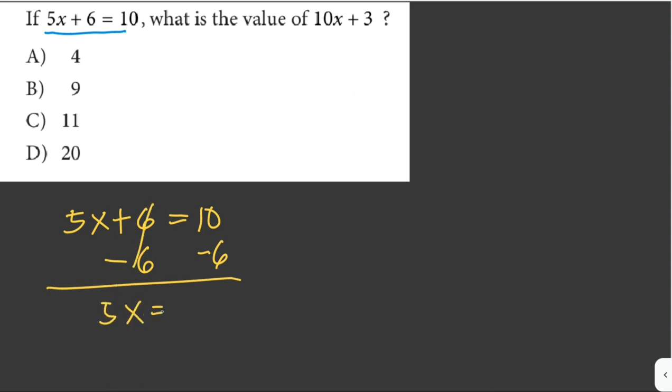We get 5x equals 4. Then we divide both sides by 5. Therefore, the value for x is equal to 4 over 5.